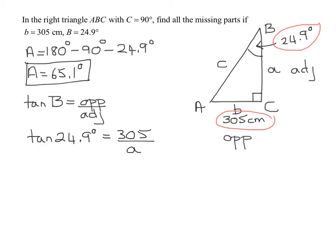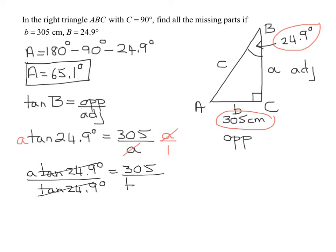So now what we have to do is we have a simple equation, we've got to solve it for A. Since A is in the denominator, I'm going to multiply both sides by the LCD of A. So I get A times the tangent of 24.9 degrees equals 305. Divide both sides by the tangent of 24.9 degrees.